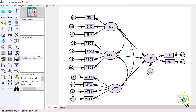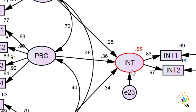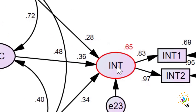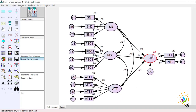Let us do the analysis. I am clicking Calculate Estimates. In the path diagram under standardized estimation, you can see on top of intention a red color value of 0.65. This 0.65 is the squared multiple correlation, or R-square value, for subjective norm, perceived behavior control, and attitude combined. So these three together have an R-square of 0.65.